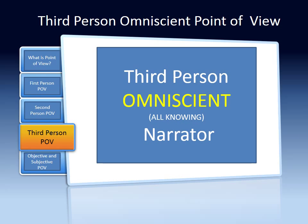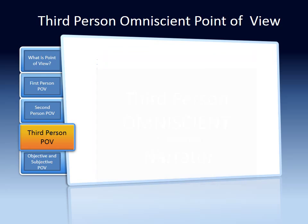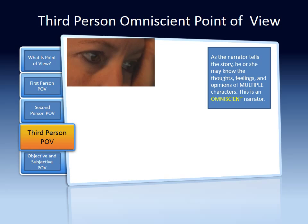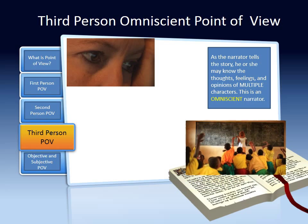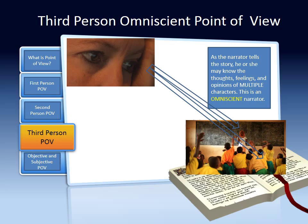Now let's look at third-person omniscient narrator. With a third-person omniscient narrator, as the narrator tells the story, he or she may know the thoughts, feelings, and opinions of multiple characters.